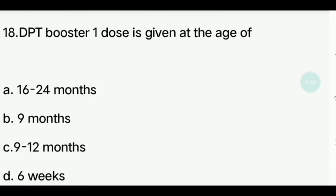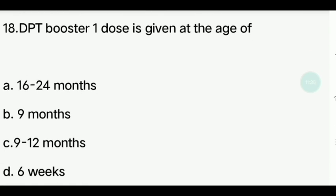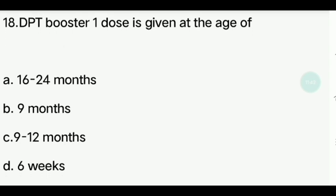Eighteenth question. DPT booster 1 dose is given at what age? Options: 16 to 24 months, 9 months, 9 to 12 months, 6 weeks. Answer is 16 to 24 months.